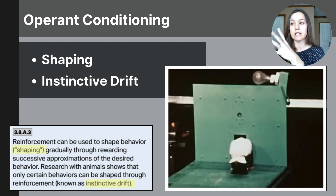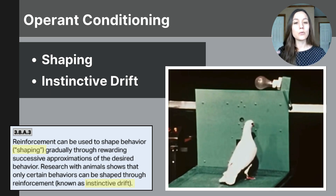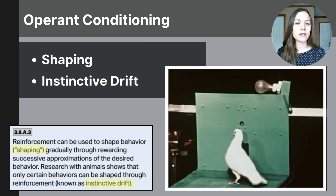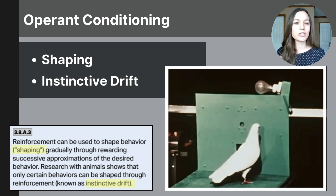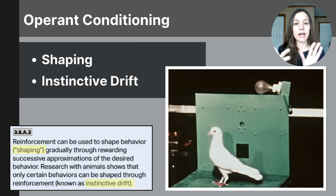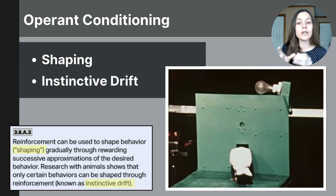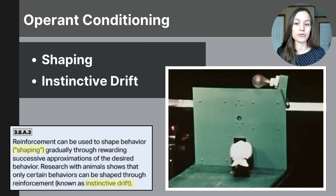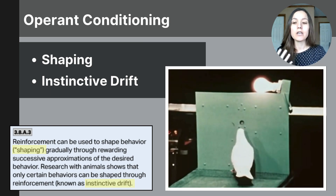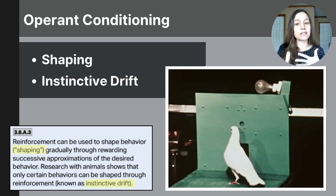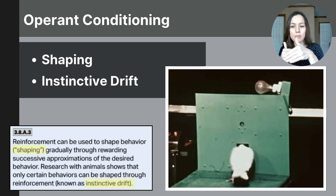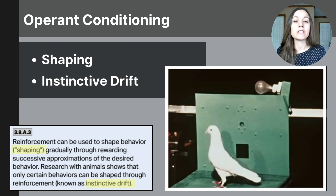So how do we get an individual from not doing a behavior to doing it? One process used is called shaping. In a brief recording on screen, one of Skinner's pigeons is being conditioned to turn around. When the pigeon starts to turn even a little bit, a light turns on signaling it can get a treat. As it turns a bit more, the light turns on again and it gets another treat — continuing until the pigeon does the full behavior. This process of gradually rewarding successive approximations of the desired behavior is called shaping.